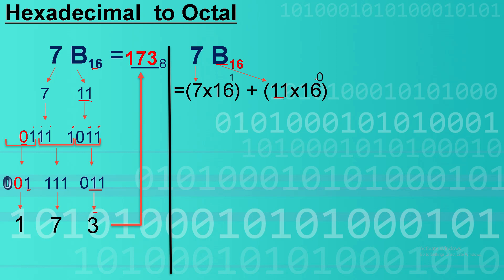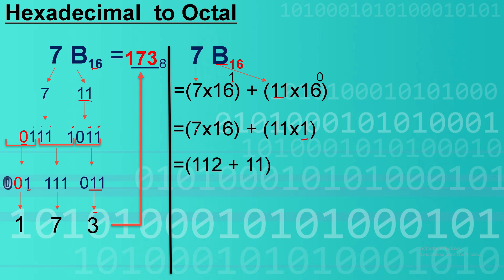Do not forget to put the exponent. We start from 0, then 1. So 7 times 16, since 16 is equal to 2 raised to the power of 1. Then 11 times 1 — any number raised to the power of 0 is equal to 1, that is the exponential rule. So 7 times 16 equals 112, then 11 times 1 equals 11. The total of these two numbers is 123.